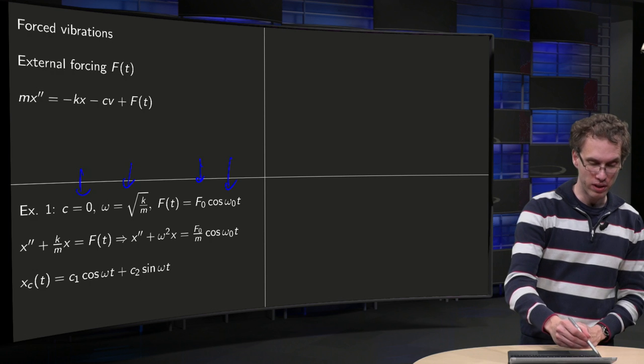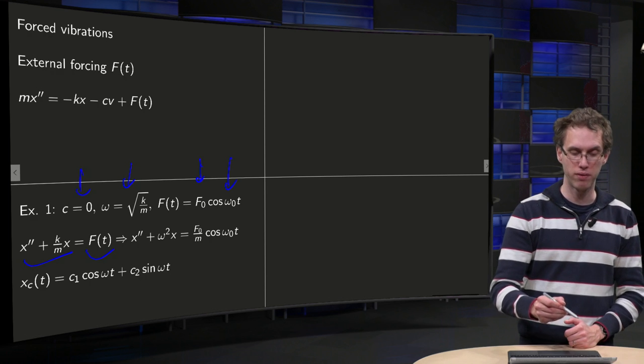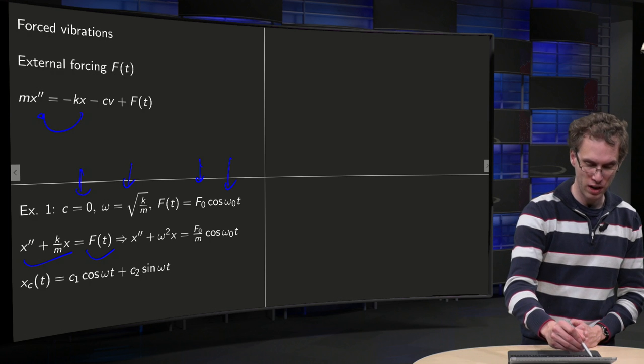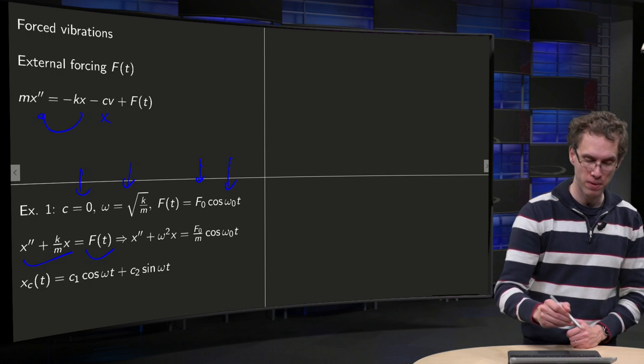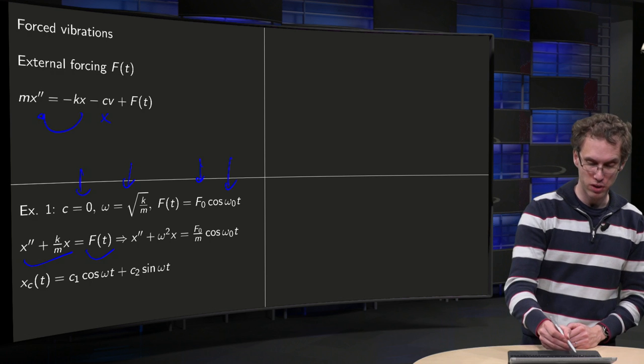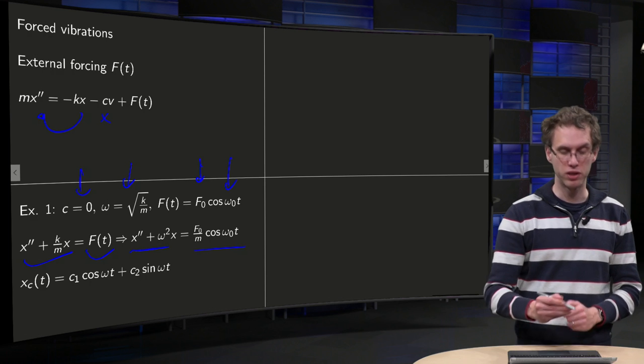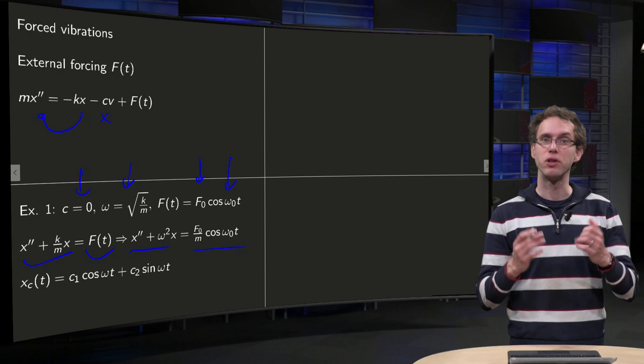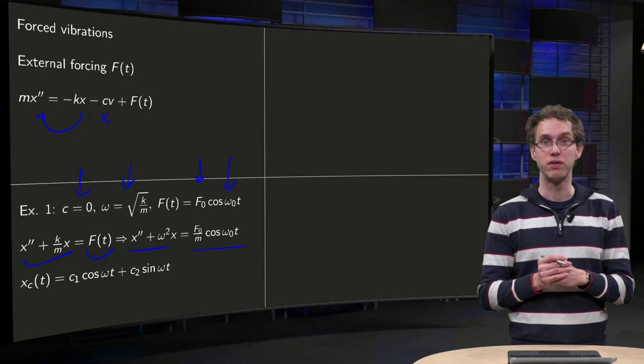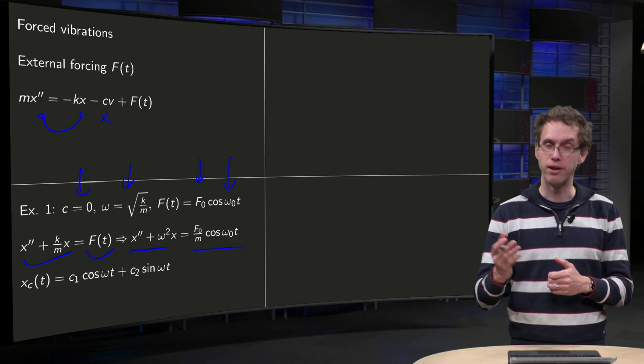So then we get our equation x double dot plus k over m times x equals external forcing F(t), by bringing this term to the other side, and this term will be zero anyway. Plug in k over m equals omega squared, and plug in the expression for F. Then we have our differential equation over here, and we observe that we have a second order linear differential equation with constant coefficients, which is now, however, inhomogeneous.